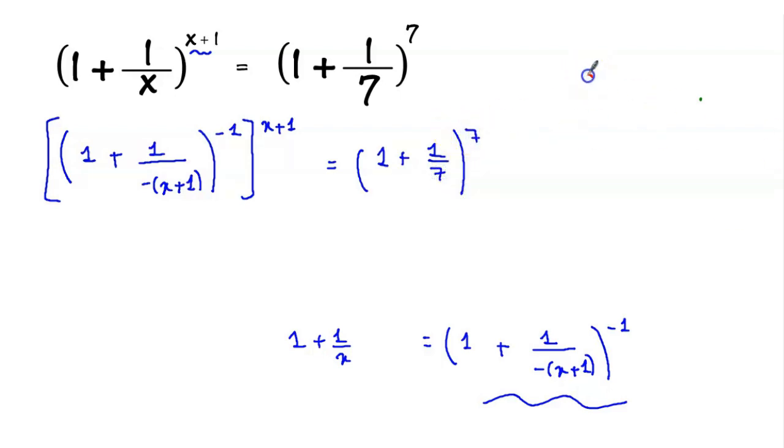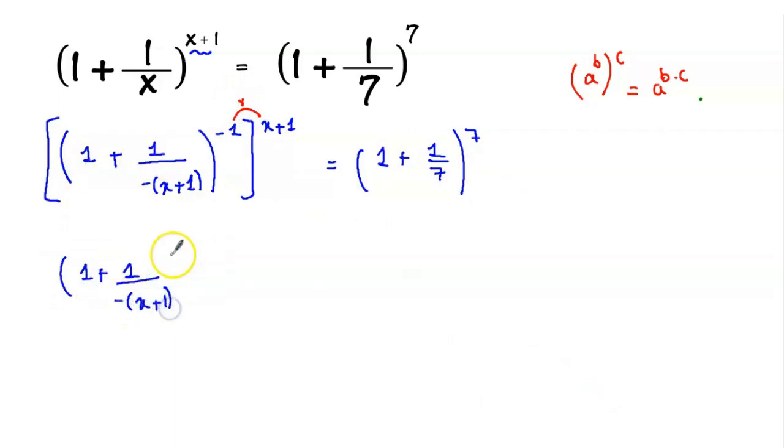Now, if we have a to power b to power c, it's equal to a to power b times c. So let's multiply these exponents. So 1 plus 1 over minus x plus 1 to power minus x plus 1 equal to 1 plus 1 over 7 to power 7.